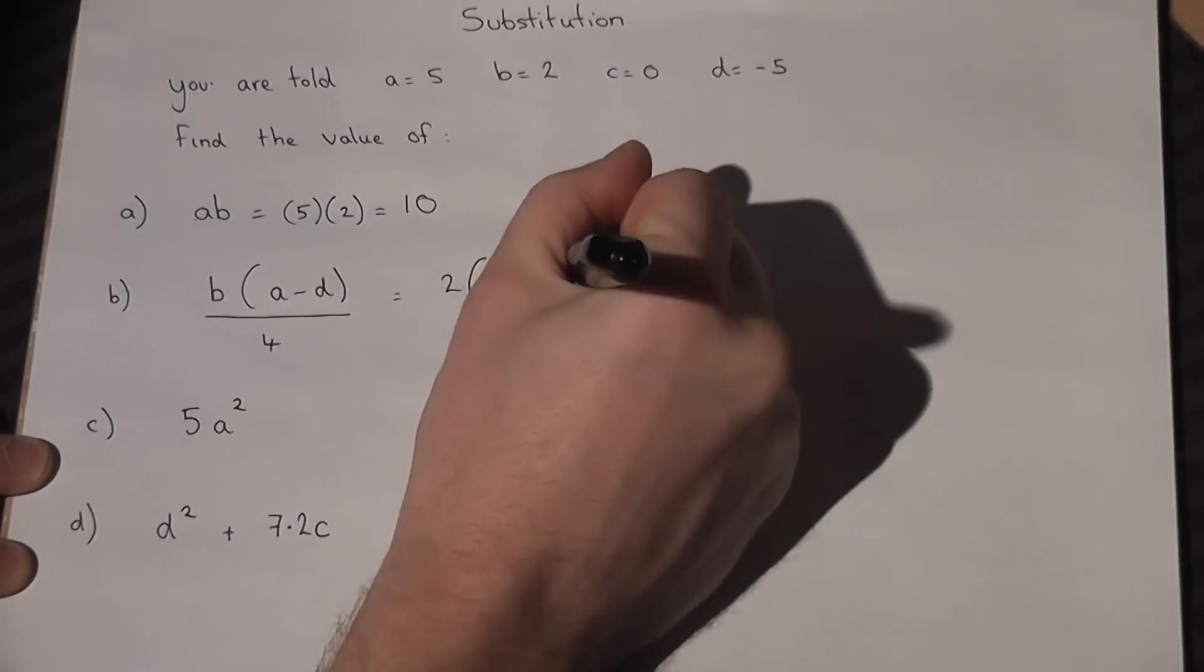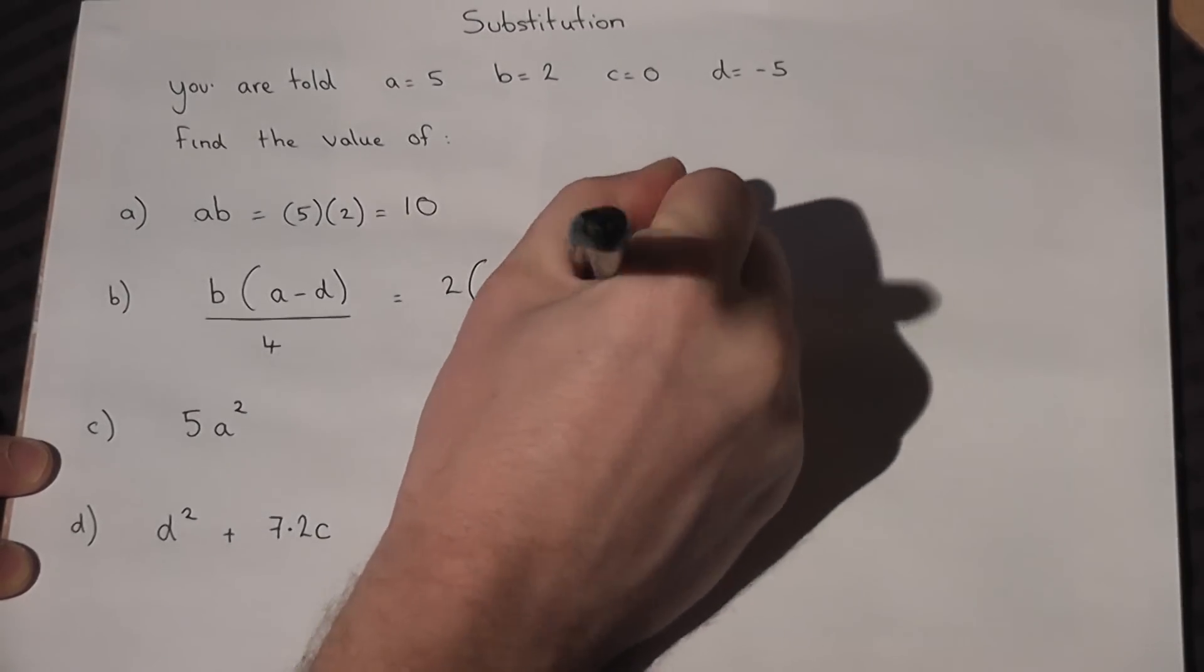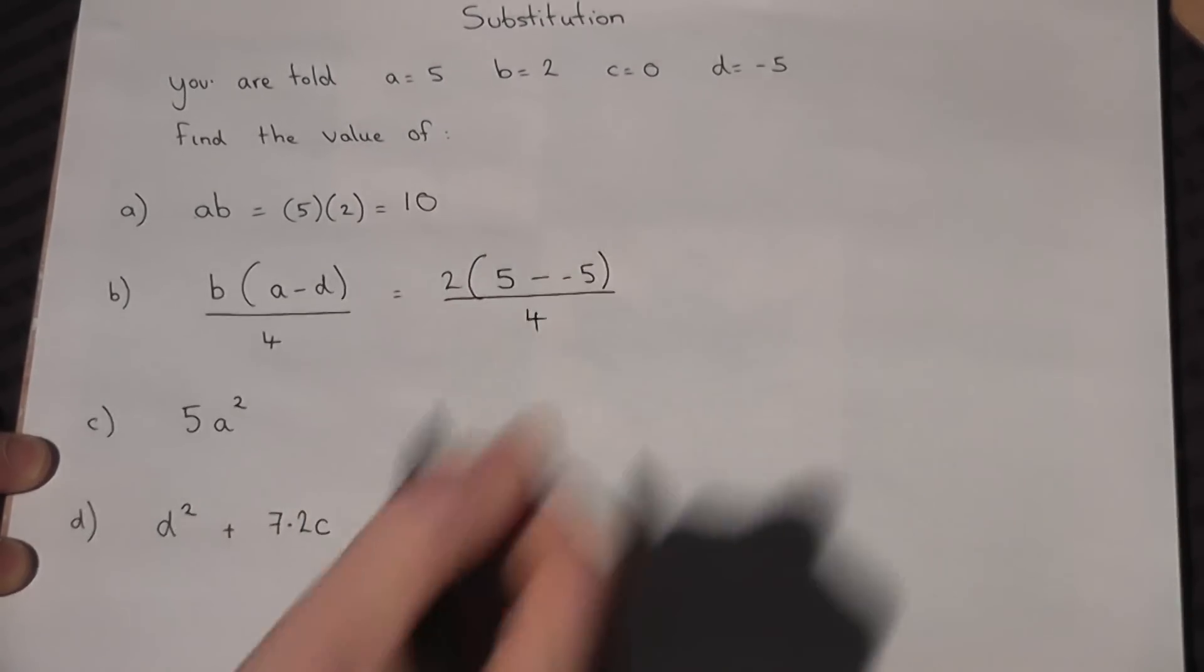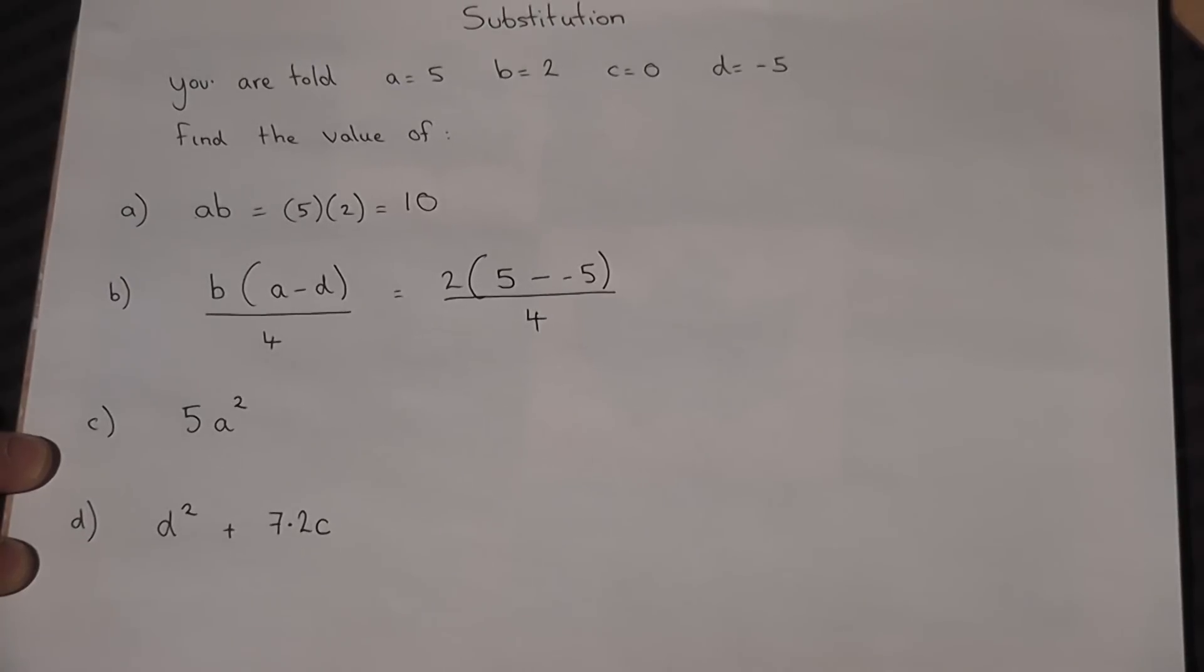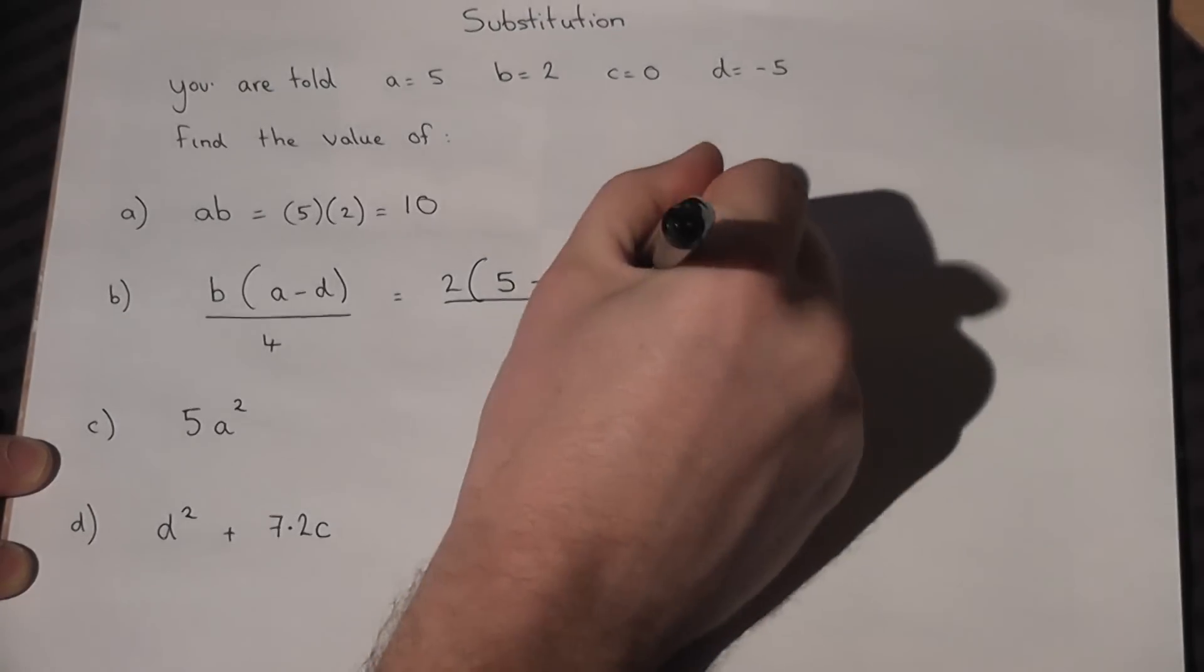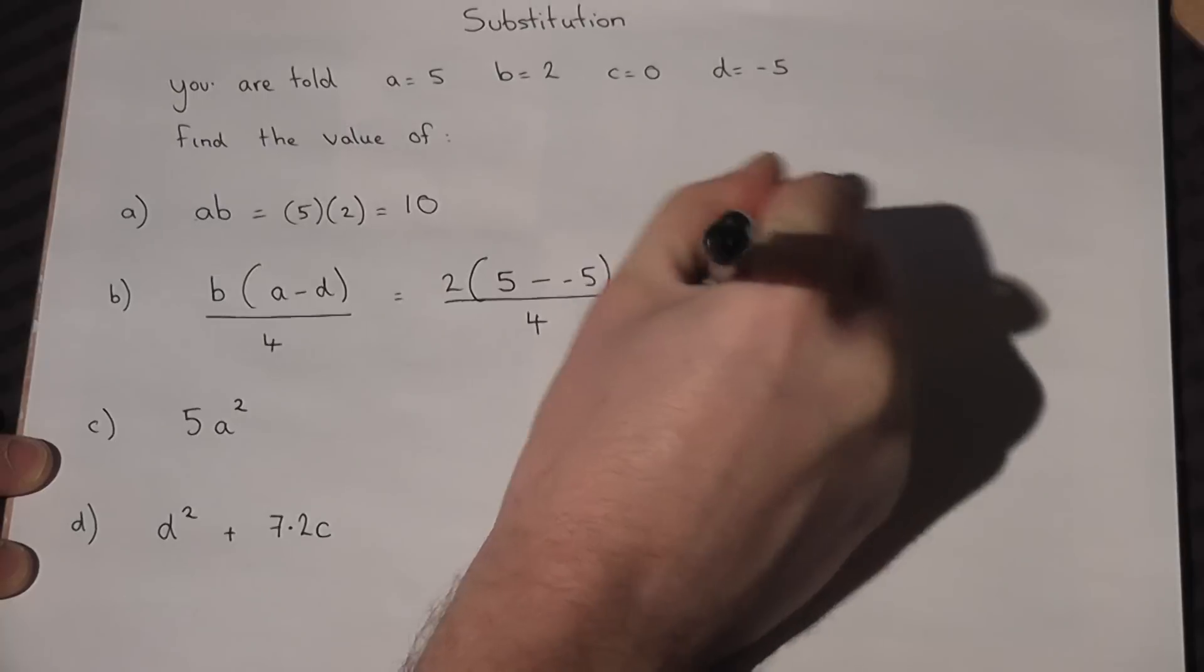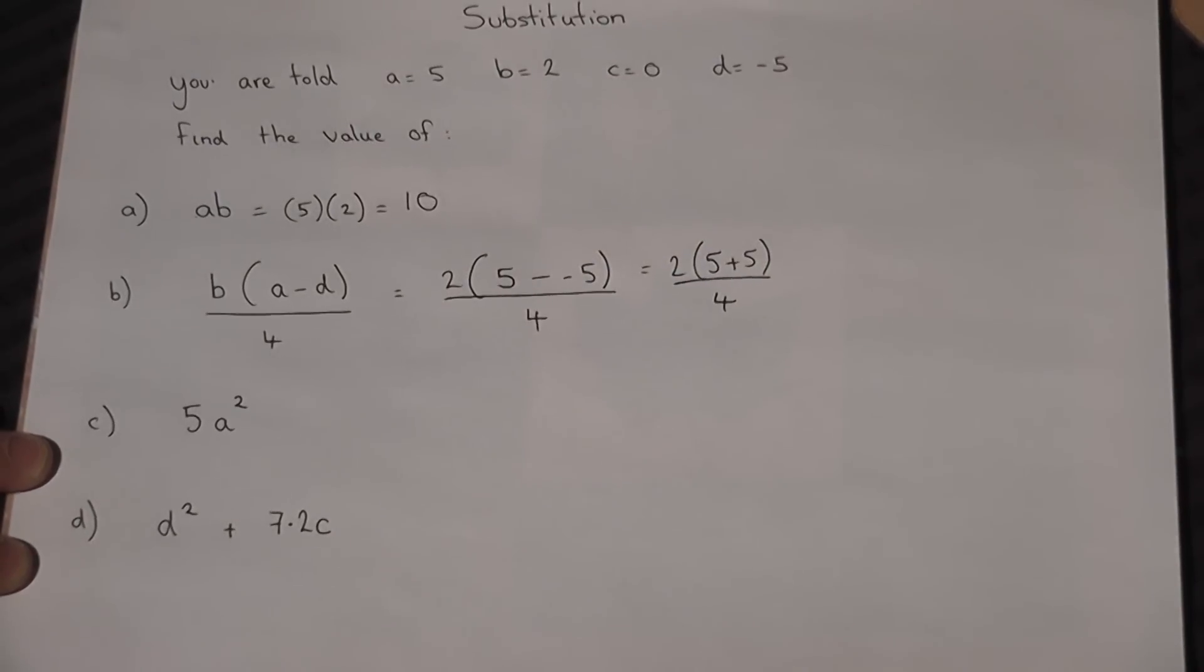Now, the next thing is to work out the brackets first. Two minuses become positive, so 2 times (5 plus 5) over 4. Now work out the bracket: 2 times 10 over 4.